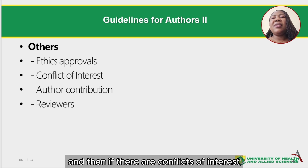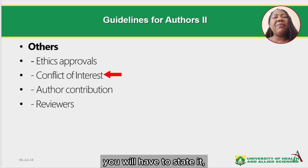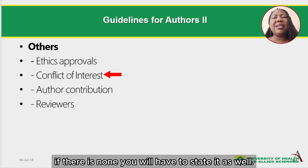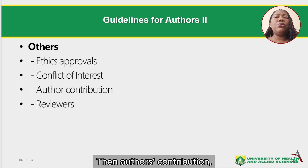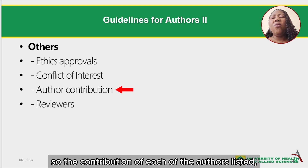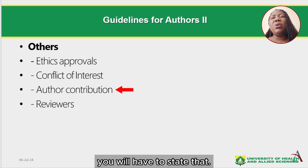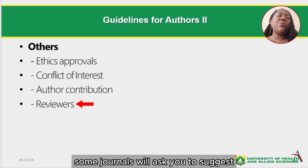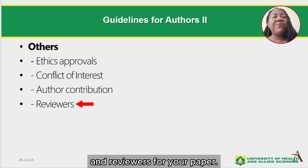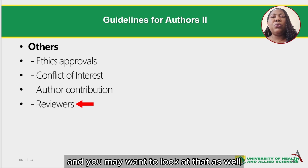If there are conflicts of interest, you will have to state it. If there is none, you will have to state that as well. Then author's contribution — the contribution of each of the authors listed, you will have to state that. Some journals will also ask you to suggest reviewers for your paper, and you may want to look at that as well.